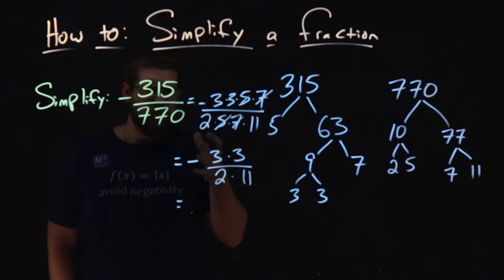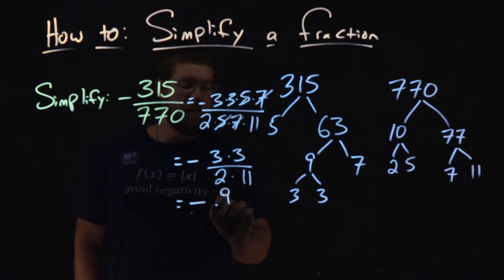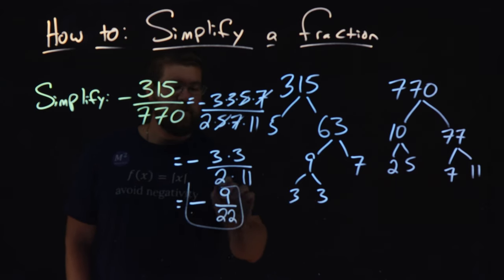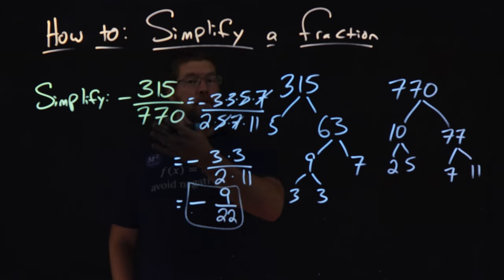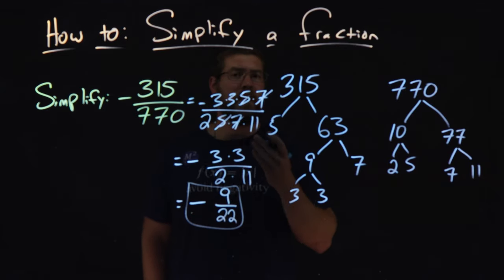Then from here, let's re-multiply these back out. We have negative 3 times 3 is 9, and 2 times 11 is 22. And so there we have it. We simplified the fraction, negative 315 over 770, and we got negative 9 over 22.